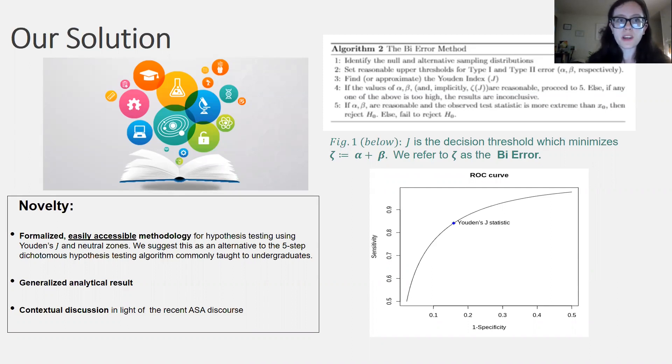In this paper, I propose an updated algorithm for hypothesis testing, which takes influence from recent literature on hypothesis testing with neutral zones. Like the old method, it is a simple, five-step procedure, and I improve its accessibility and ease of execution by deriving a generalized mathematical result. I present the method here in the top right corner.